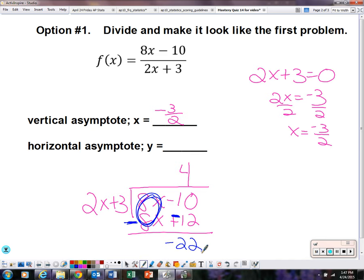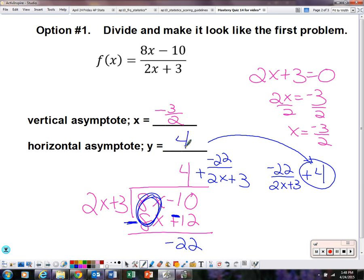So now, we can rewrite this. One way we can rewrite this is 4 plus the remainder, negative 22, over 2x plus 3. But if you recall, it doesn't look exactly like number 1. So you could rewrite that as negative 22 over 2x plus 3 plus 4. And now, the horizontal asymptote is the 4. That's option number 1 in finding the horizontal asymptote.